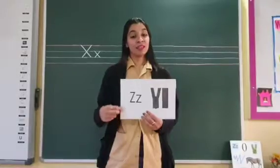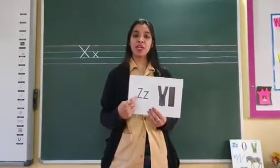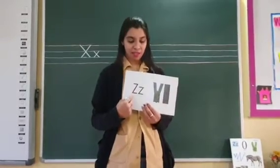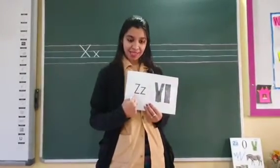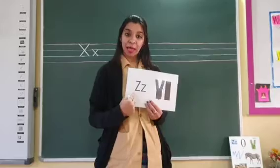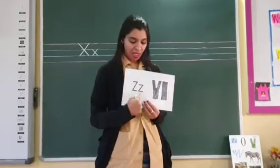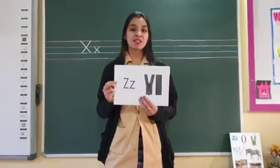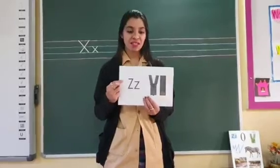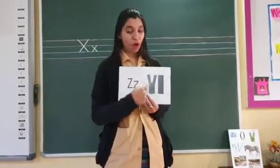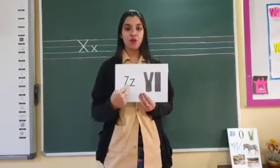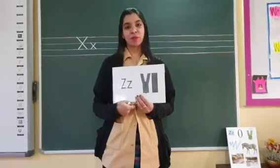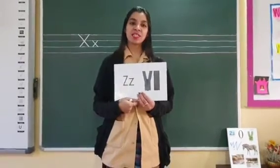The next letter and the last letter of the alphabet is letter Z. Capital Z, small z. Z says 'zzz'. Z for zebra. Now let us see on the blackboard how do we write letter Z.